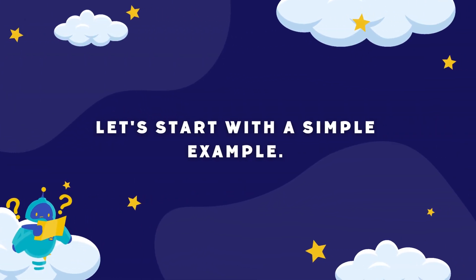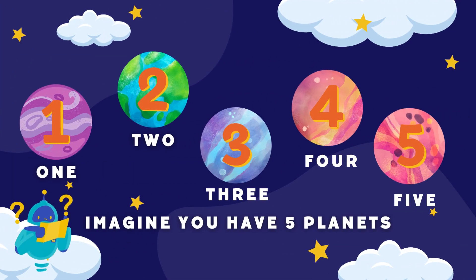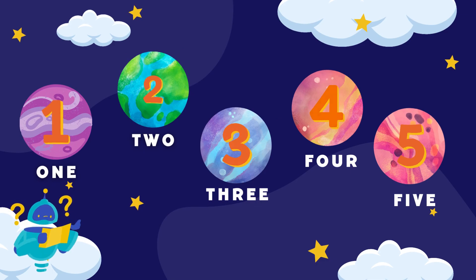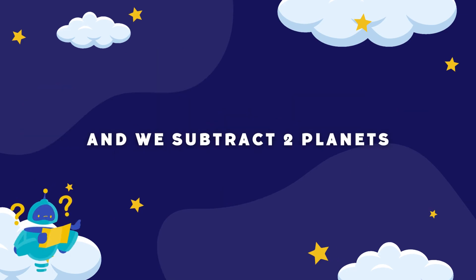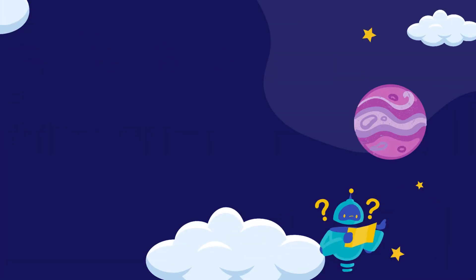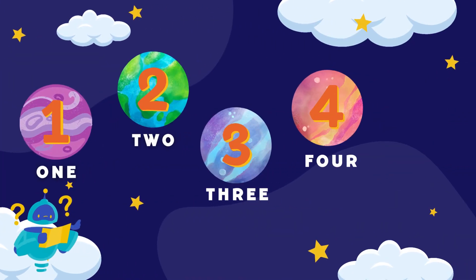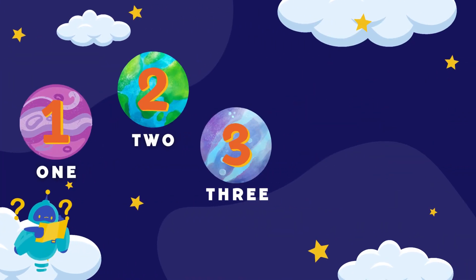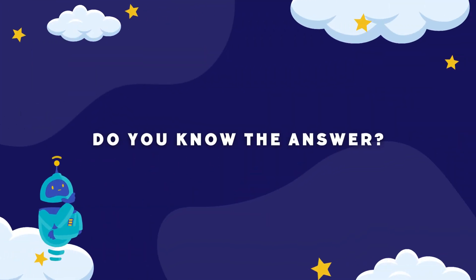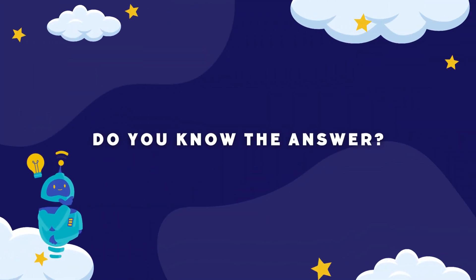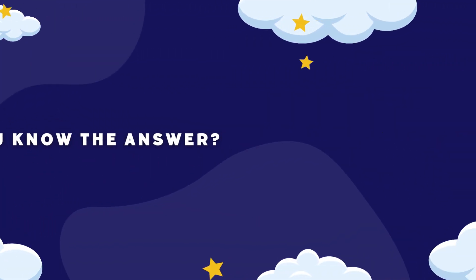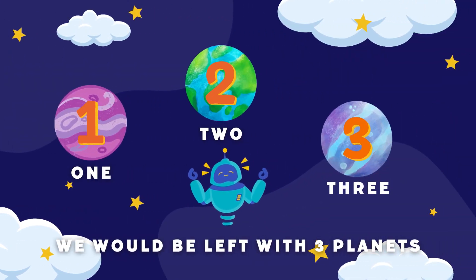Let's start with a simple example. Imagine you have five planets: Planet 1, Planet 2, Planet 3, Planet 4, and Planet 5. And we subtract two planets — Planet 5 and Planet 4. How many planets do you think will be left? Do you know the answer? We would be left with three planets.